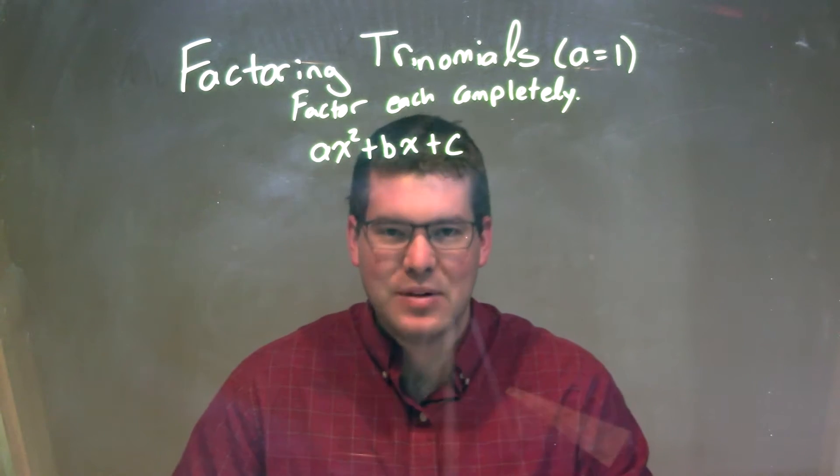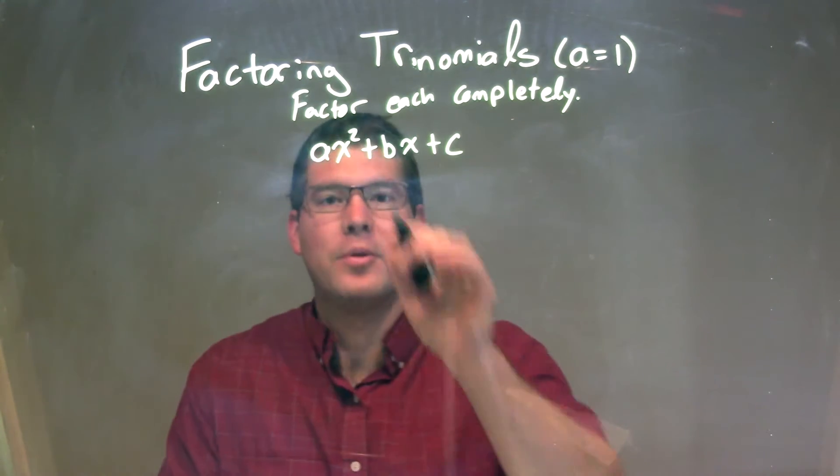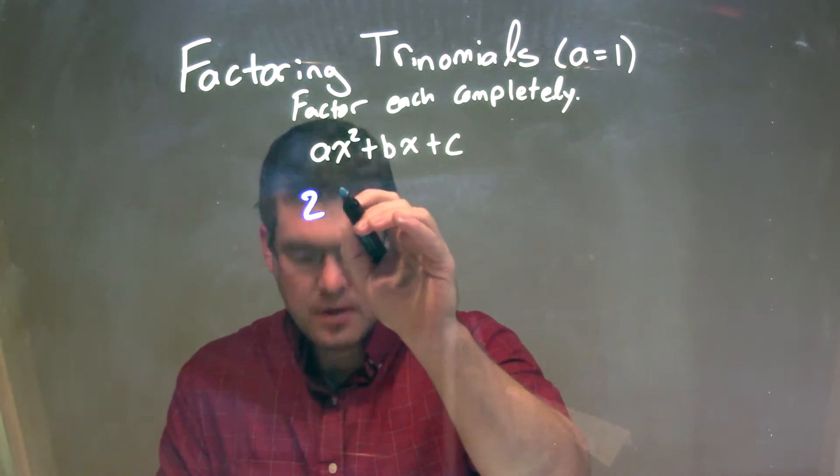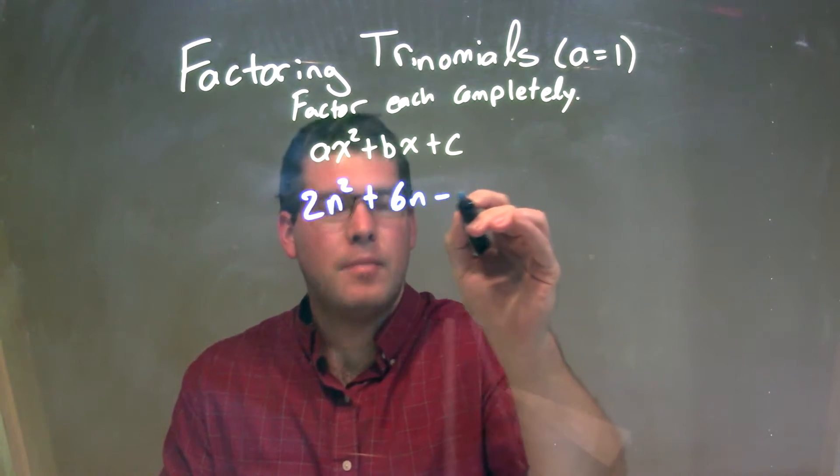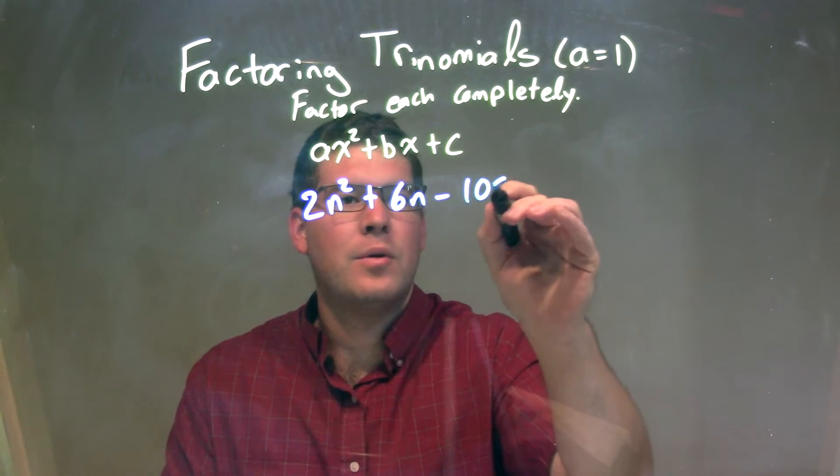I'm going to factor each trinomial completely. So if I was given this trinomial, 2n squared plus 6n minus 108.